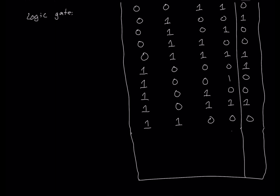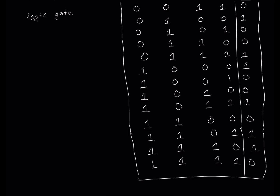If input A is high, B is low, C is high, and D is high, the output will be high. If A is low, B is high, C is high, and D is high, the output will be high because we have odd numbers of high inputs. Finally, if all inputs are high — A, B, C, and D all high — the output will be low.